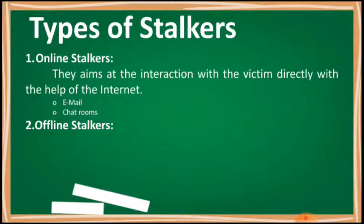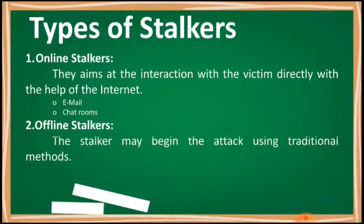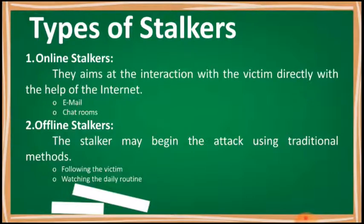The next type is offline stalkers. The stalker may begin the attack using traditional methods such as following the victim, watching the daily routine of the victim, etc. Searching on message boards or newsgroups, personal websites, and people-finding services or websites are the most common ways to gather information about the victim using the internet. The victim is not aware that the internet has been used to create an attack against them.